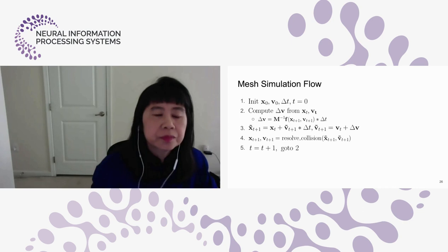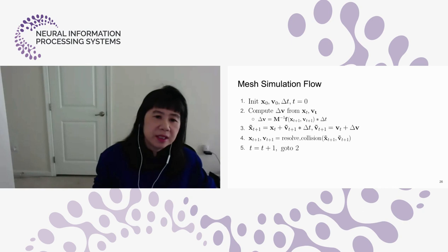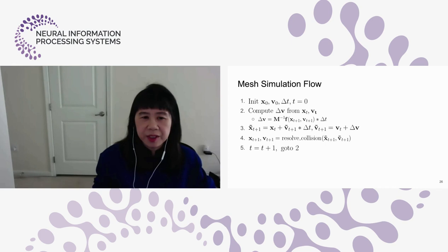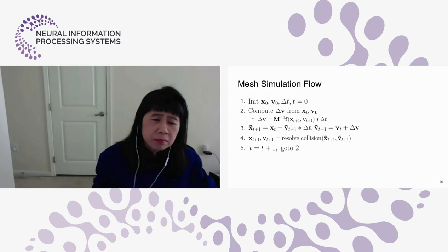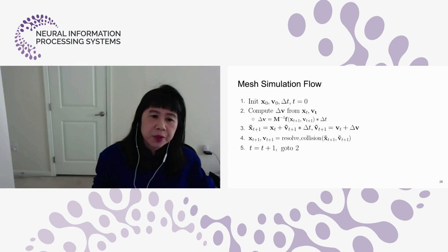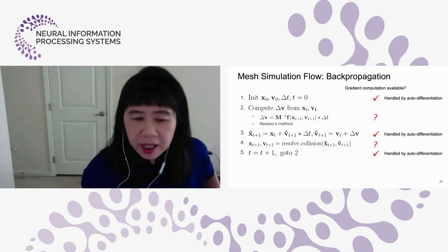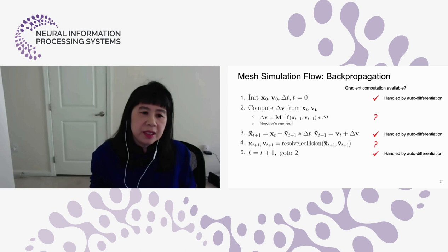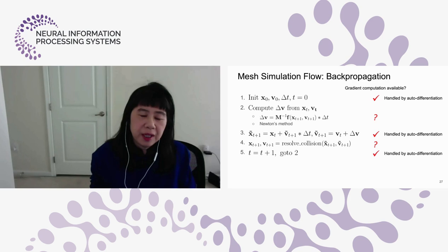For the mesh simulation flow, you initialize your state — typically position, velocity, and time step — then update your dynamical system's state and resolve any possible collisions or intersections that result from the simulation, and increment time. We can perform these numerical updates using auto-differentiation for many of the steps. The challenge is to figure out how to update states and resolve collisions efficiently.